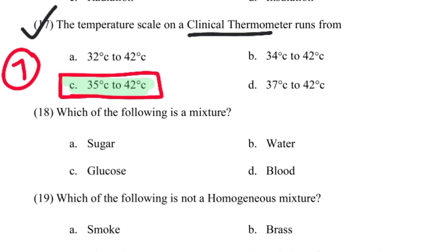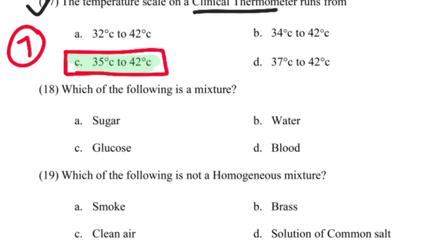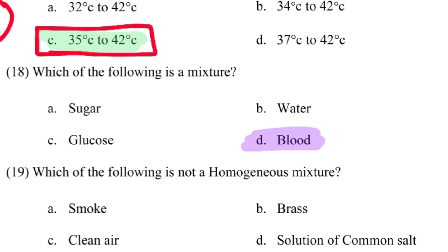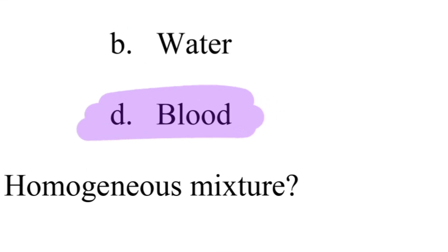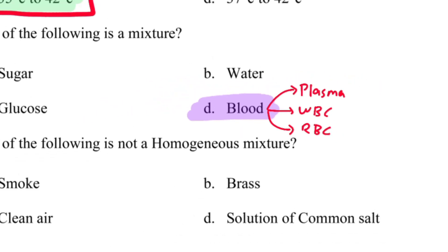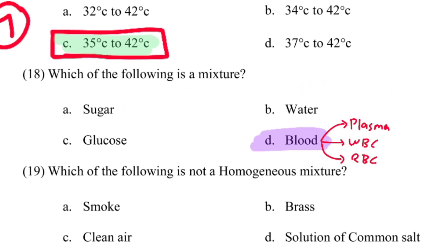Which of the following is a mixture? Options include sugar, water, glucose, and blood. The correct answer is blood, as blood is a mixture.